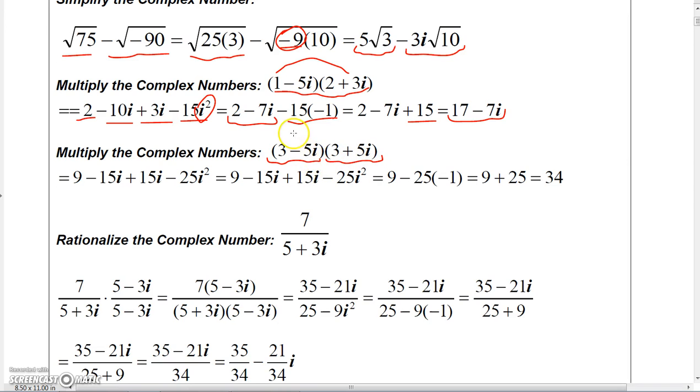So watch what happens here. If I multiply 3 times 3, I get 9. If I multiply the outer product 3 times 5i, I get 15i. If I multiply the inner product -5i times 3, I get -15i.